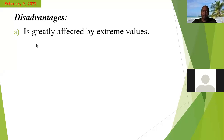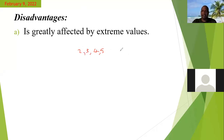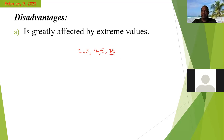The disadvantage with the mean is that it is affected by extreme values. If you have a set of values like two, three, four, five, and then an extreme value like 75, finding the mean including 75 will not give you a true reflection of what the average really is, because this extreme value greatly affects what the mean value should be.